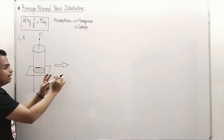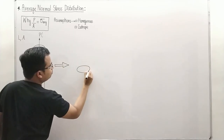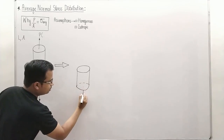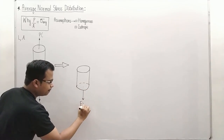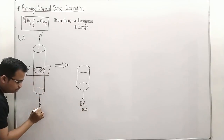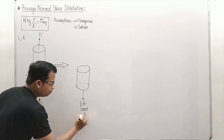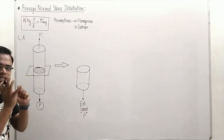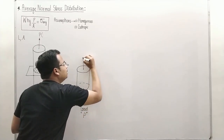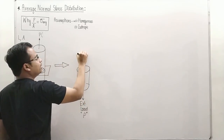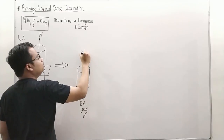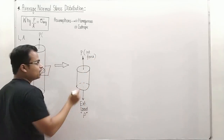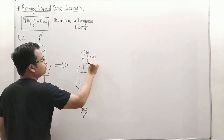There is an external load acting here — the external load is P. Obviously, if there is a load, some kind of resistance will develop. The total resistance developed across this cross-section is equal to P. This is the external load or external force, and this over here is the internal force or load — the internal resistance offered.